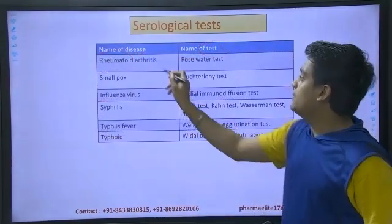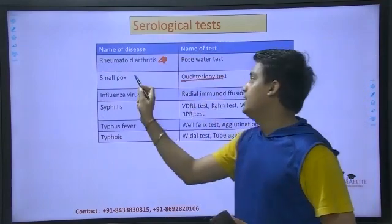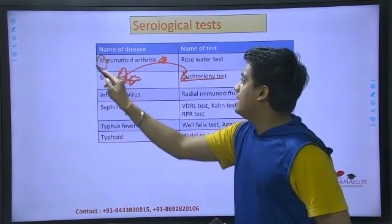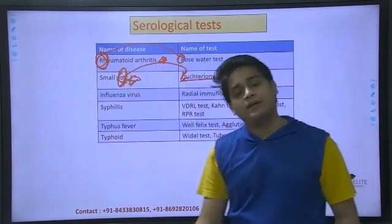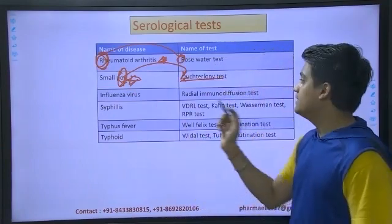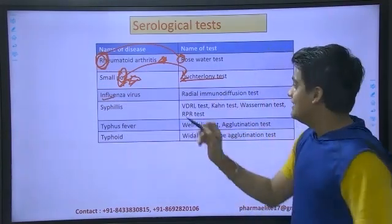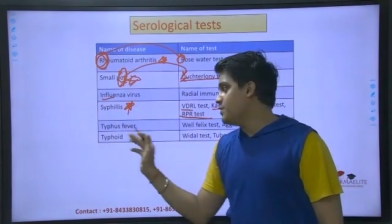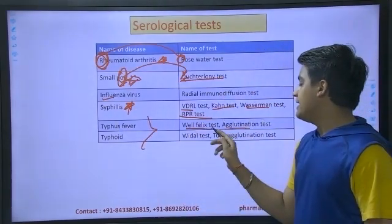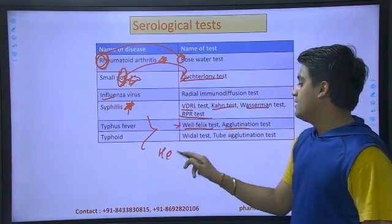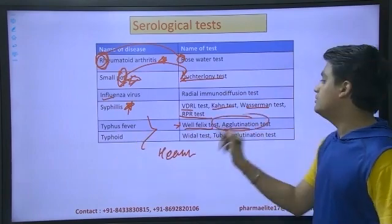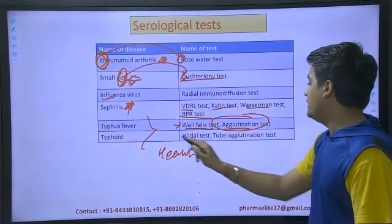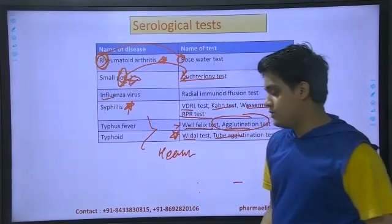Rheumatoid arthritis is another favorite question. It has been questioned again. Typhus fever uses an agglutination test — the Weil-Felix test, a hemagglutination test. Remember, cold hemagglutination test was on the previous slide for a different disease, and this is only agglutination test. Typhoid uses the Widal test — very, very important — along with the tube agglutination test.